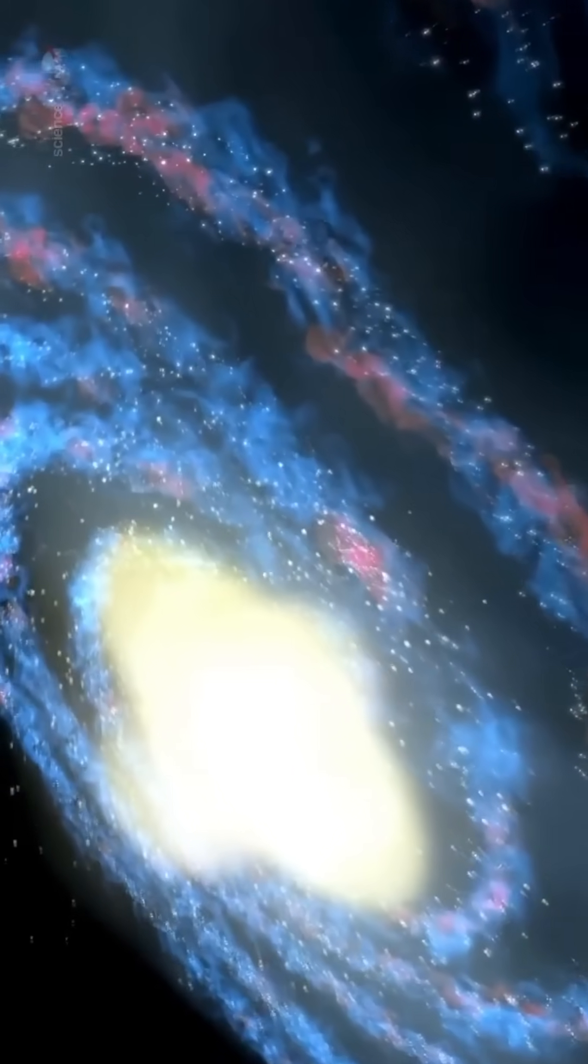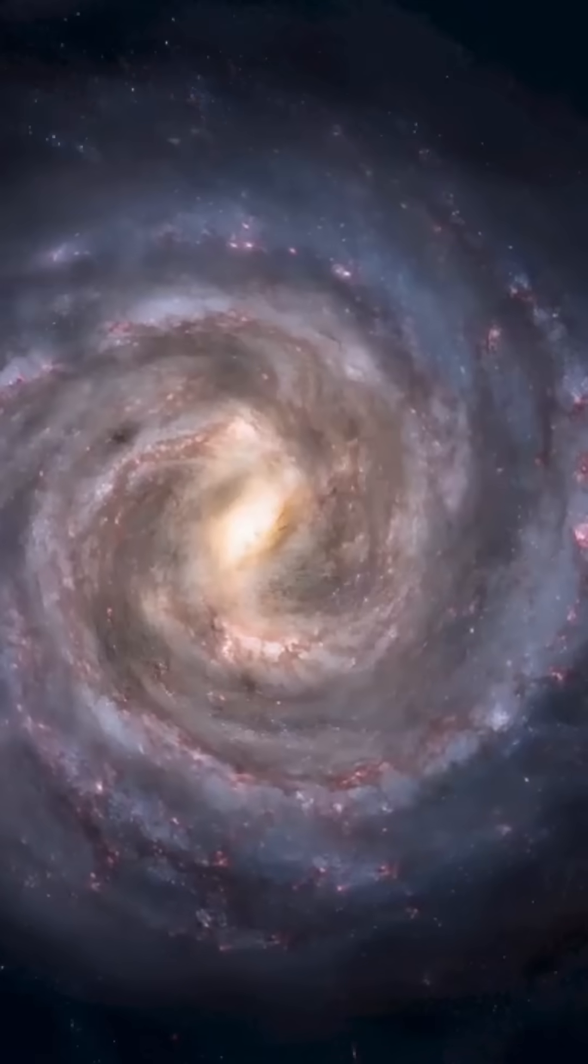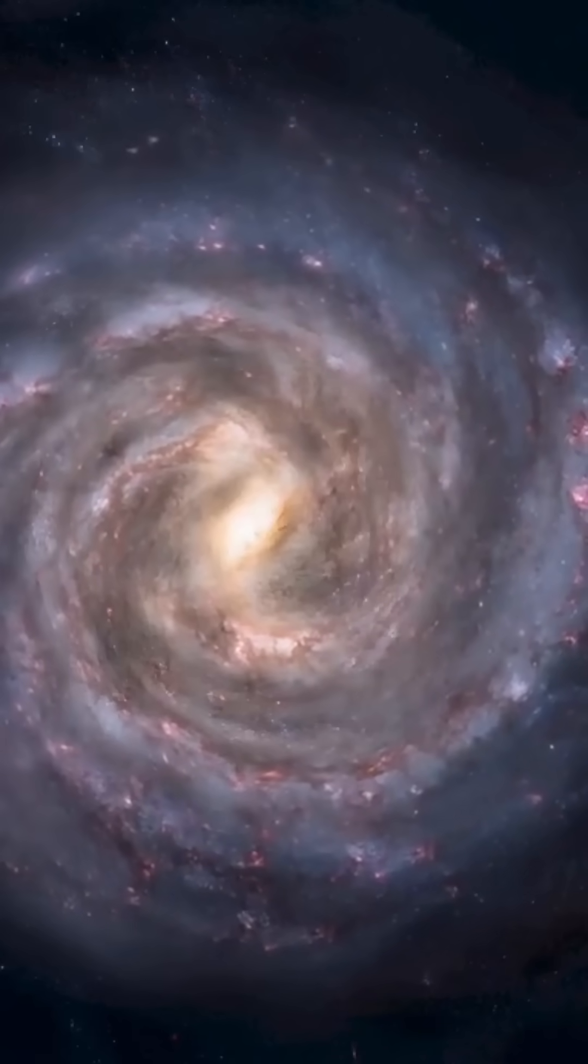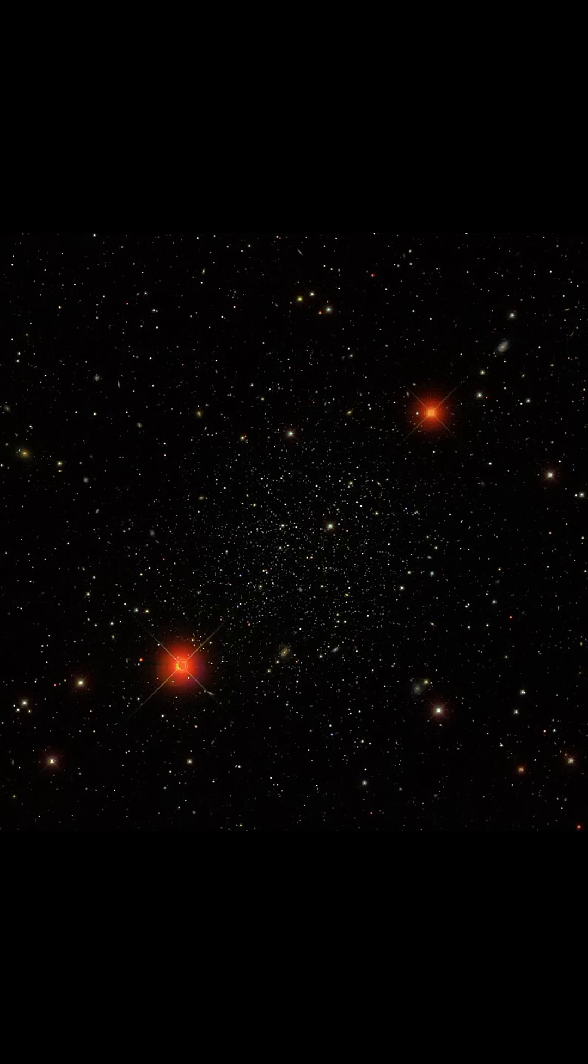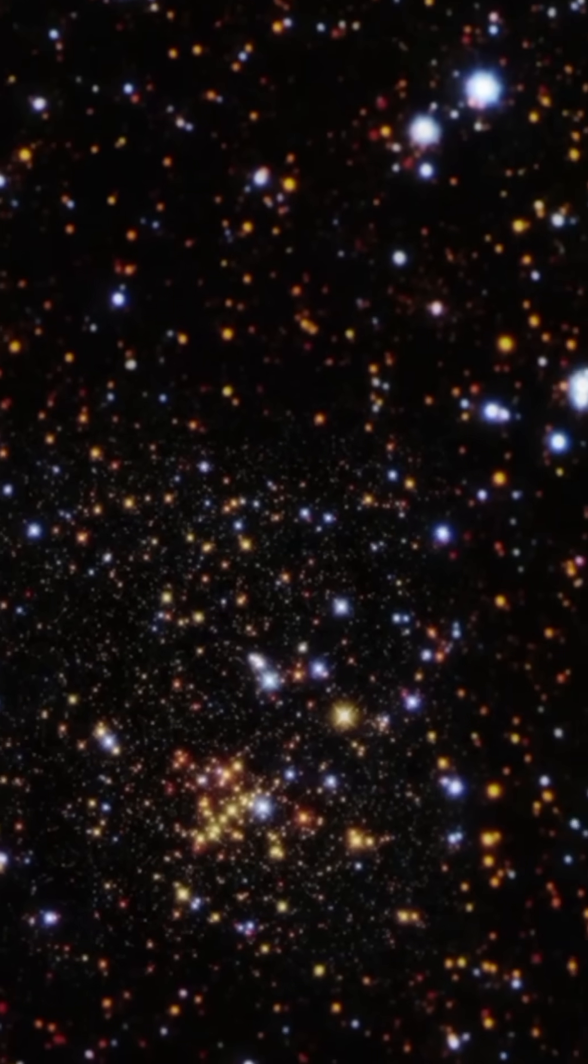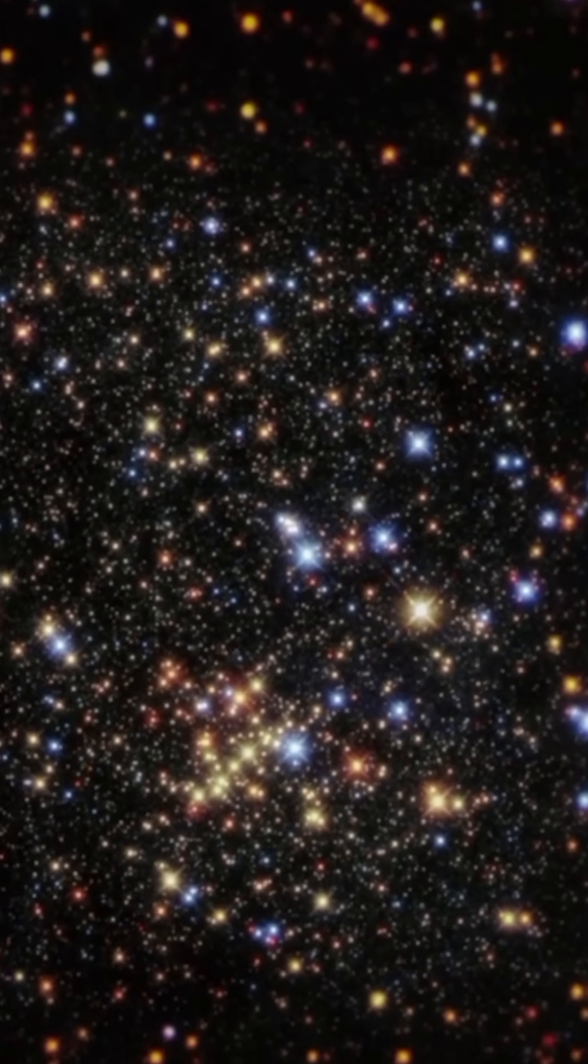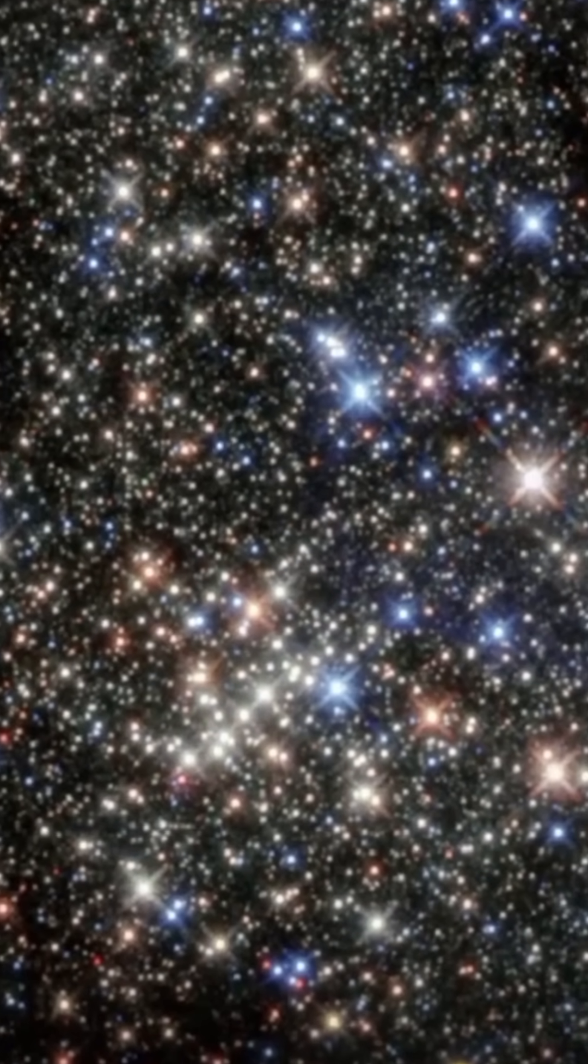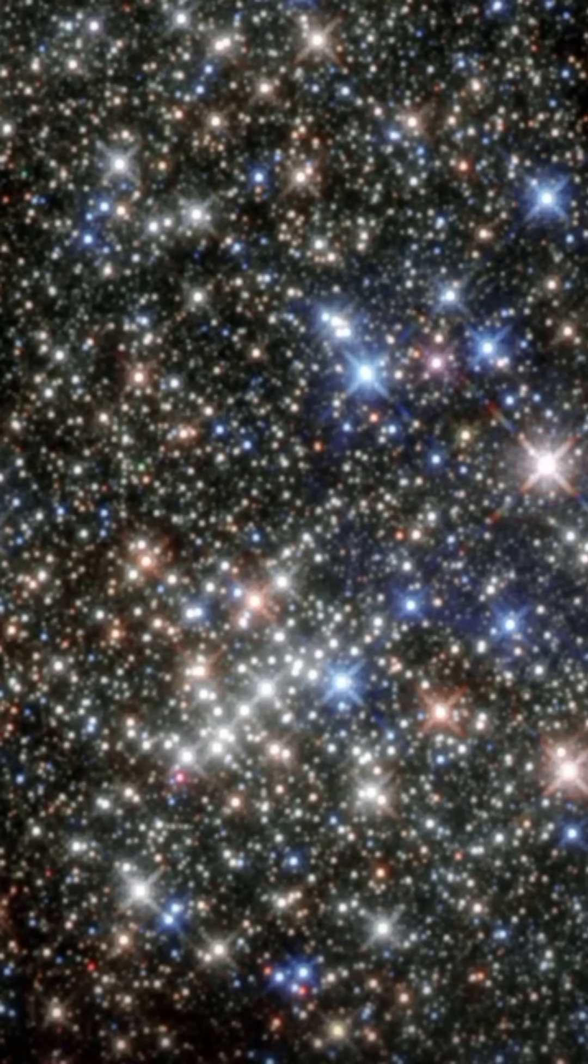Hidden in the Milky Way lies a star cluster with a dark secret – over 100 stellar-mass black holes. Meet Palomar 5, a fluffy, ancient star cluster stretching 30,000 light-years across and located 80,000 light-years away. But this isn't your typical globular cluster.